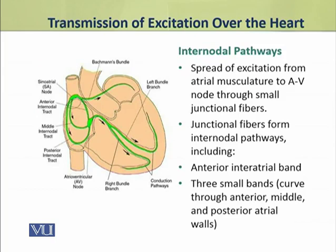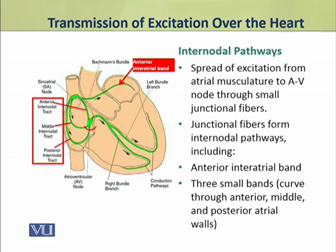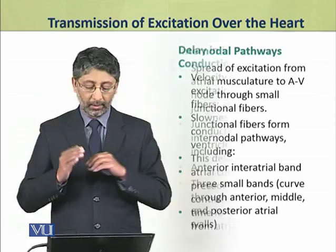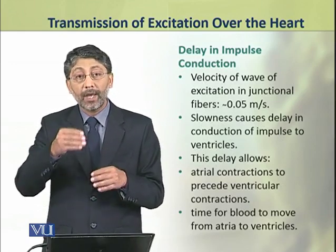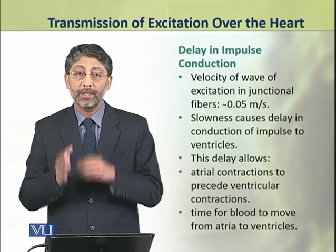The spread of excitation from atrial musculature to the atrioventricular node occurs through small junctional fibers. These junctional fibers form inter-nodal pathways. These inter-nodal pathways include an anterior inter-atrial band and three small bands which curve through the anterior, middle, and posterior atrial walls. The velocity of the wave of excitation in junctional fibers is very low — about 0.05 meter per second.